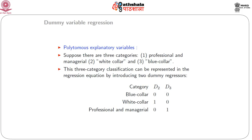Now suppose we have a polytomous dummy variable. In the previous example, the dummy variable took two values — 1 for male and 0 for female. But there could be situations with more than two categories. For example, consider the regression of rated prestige of occupations on income and education level. We classify occupations into three categories: professional and managerial, white collar, and blue collar.